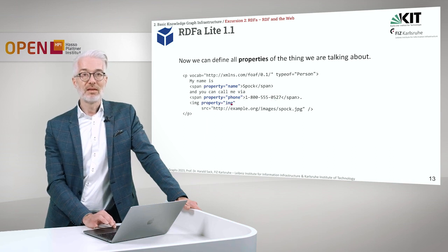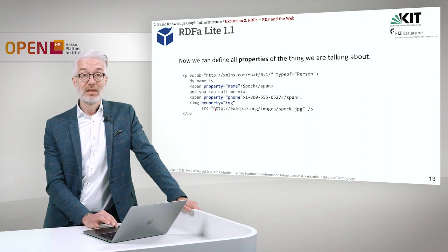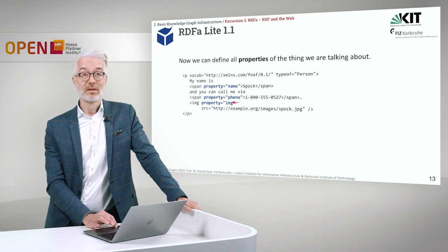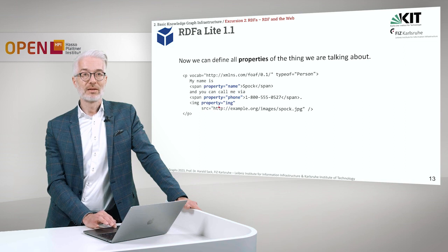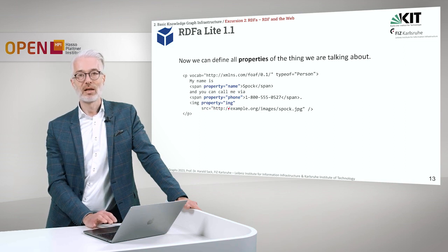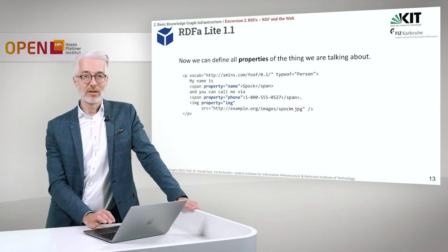From the FOAF vocabulary we take the property 'phone' and assign a character string as the phone number value. And for the property 'img' — which is of course image — we assign here the URI of a photograph that can be included. Here we are reusing an existing HTML attribute: the src attribute. Just like in HTML, you write src equals and then in double quotes the URI or IRI of the resource you want to include.